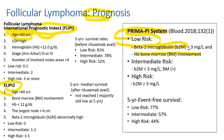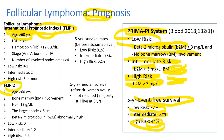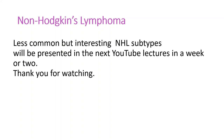Low-risk patients have a normal beta-2 microglobulin and no bone marrow involvement. Intermediate-risk patients have a normal beta-2 microglobulin but have bone marrow involvement. High-risk patients have beta-2 microglobulin over 3 mg per liter regardless of bone marrow status. The 5-year event-free survival is 77% for low risk, 57% for intermediate, and 44% for high risk. The event-free survival is different from overall survival — overall survival is much better than this. More non-Hodgkin's lymphoma subtypes will be presented in a week or two. Thank you for watching.